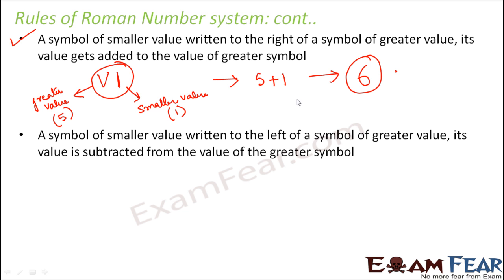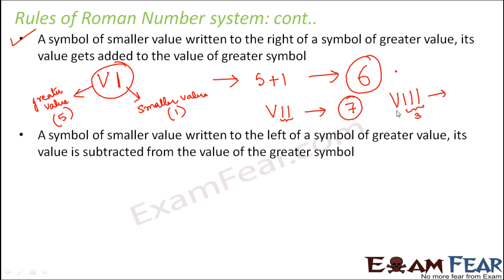Similarly, if I write 1 and another 1 after the symbol for 5, that is a symbol of smaller value — this is 2 — written after 5, so this will get added up to be 5 plus 2, that is 7. Similarly if we write it like this, this is 3 and this is 5, so writing a smaller value symbol to the right of a greater value gives 8. So this is how you represent 8. We have gradually learned how to write 2, 3, 4, 5, 6, 7, and 8.